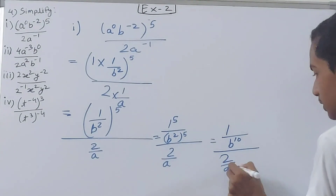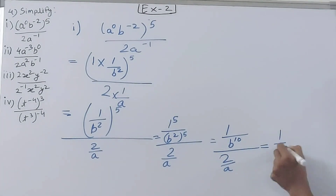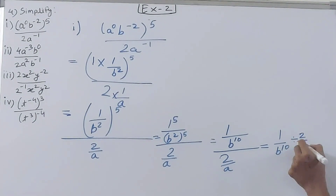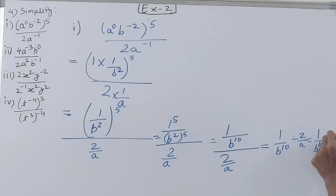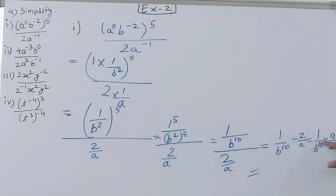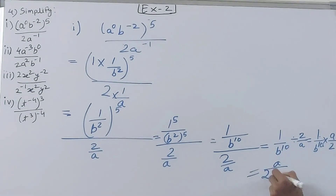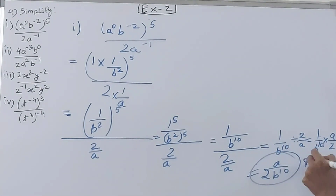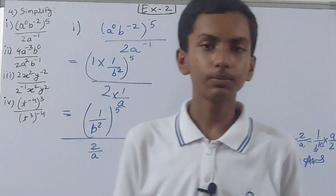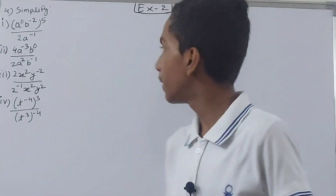So we have 1 by b to the power 10, divided by 2 by a. Dividing means multiplying by the reciprocal: 1 by b¹⁰ into a by 2. That gives a upon 2b to the power 10. This is our answer for the first part. Let's move on to the next part.